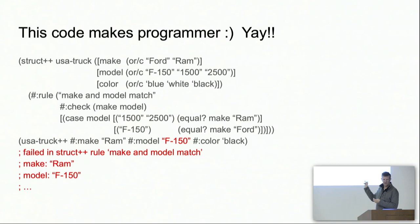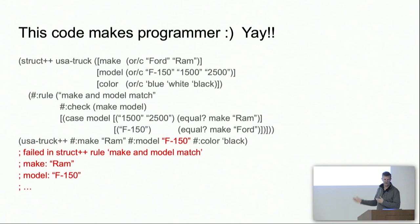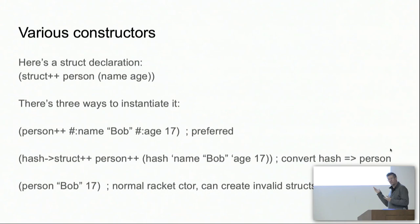This code will make the programmer happy. I'm checking each of the fields just like on the last slide, but this one also covers the interrelationships — it takes the make and the model, checks them to make sure they correspond, and does the right thing. If your struct instantiation uses invalid values, you get an exception saying the make and the model don't match.